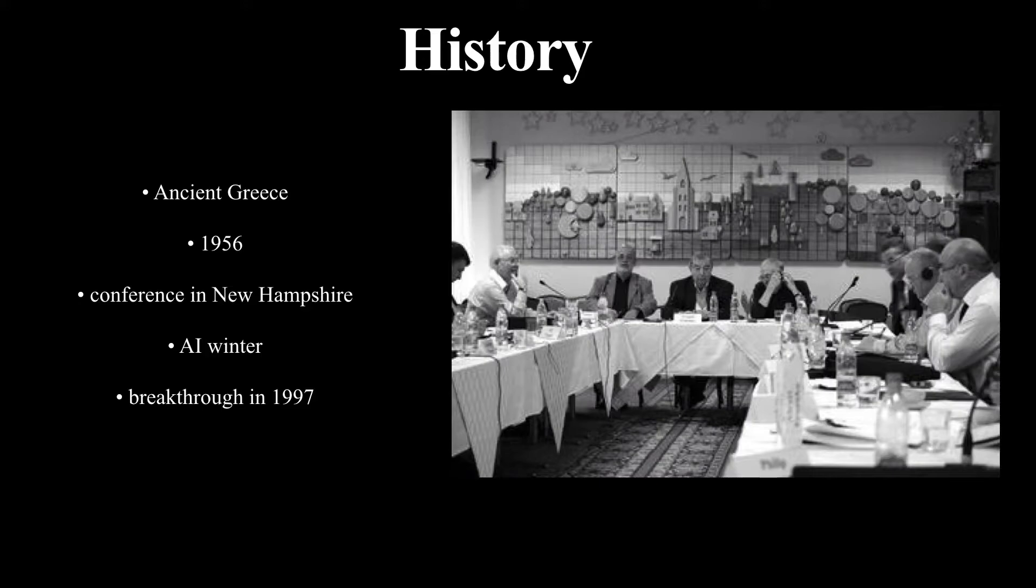At the conference, most people were very optimistic about the future of AI, and scientists started working on making an AI right away. But actually making one wasn't as easy as they thought. No one really managed to make a working AI for a long time, and the interest in the field dropped off drastically from the years between 1974 and 1980, also known as the AI winter.